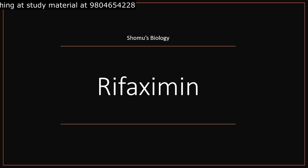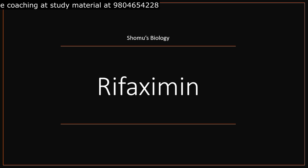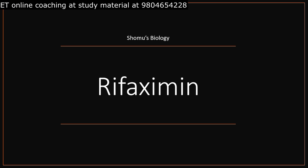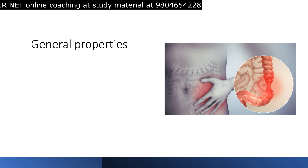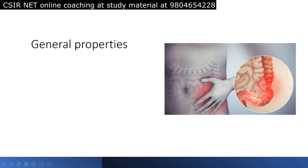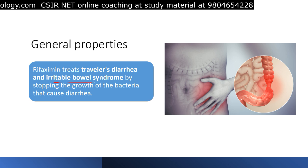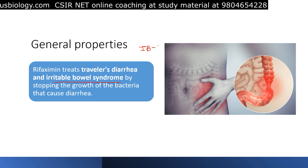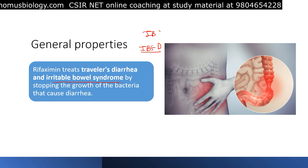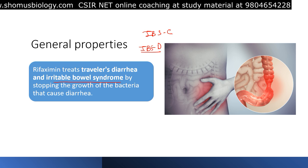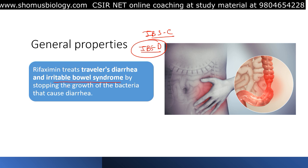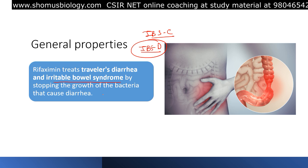Rifaximin is a really costly antibiotic right now, and it is the antibiotic of choice against traveler's diarrhea. It also works against IBS because it has multiple mechanisms, which we'll discuss in a moment. Let's start with the general properties of rifaximin — it's a completely different kind of antibiotic. It treats traveler's diarrhea or irritable bowel syndrome, particularly IBS diarrhea type. There are two types of IBS: IBS-diarrhea and IBS-constipation, and rifaximin is used for the IBS-D type.